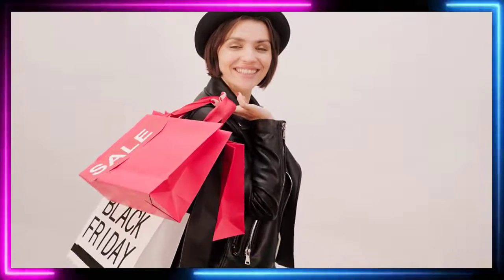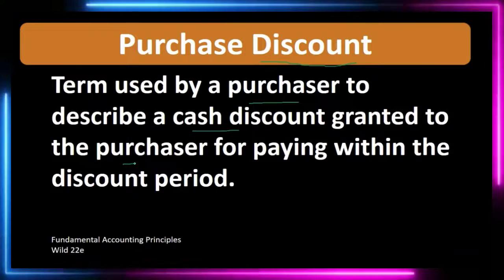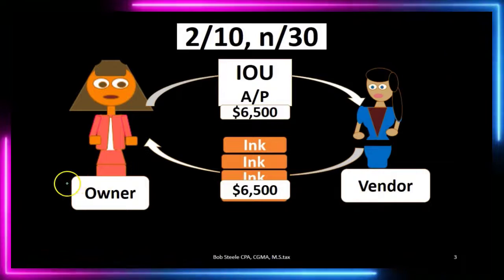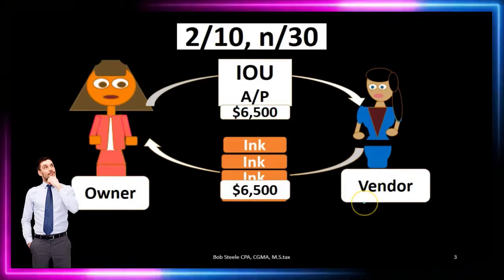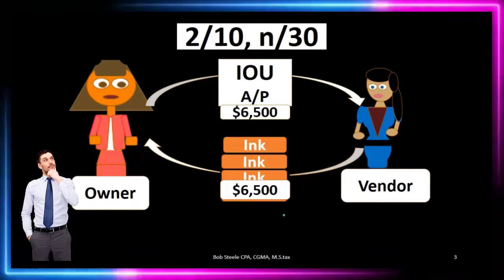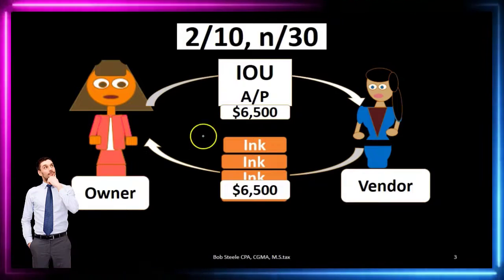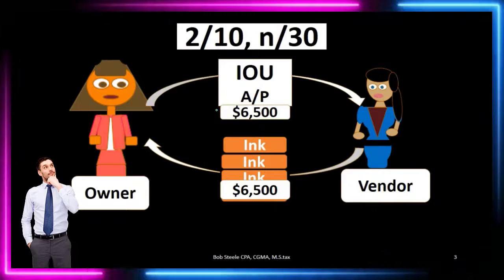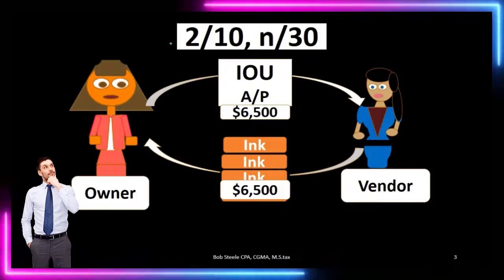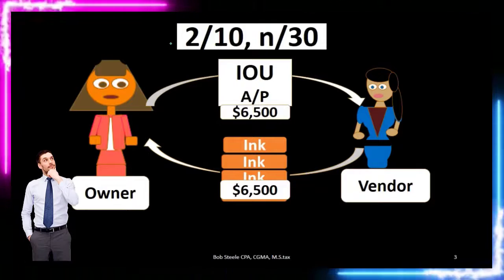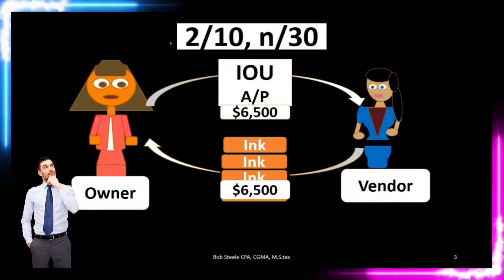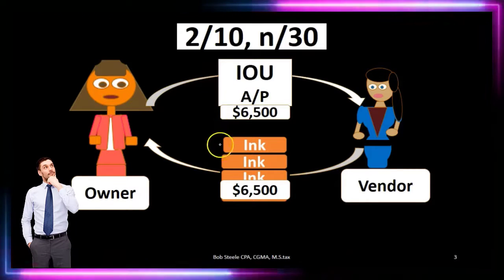We may be receiving a cash discount possibly from buying something like inventory from the seller or vendor. In this transaction, we are the owner on the left side and the vendor is on the right. We are purchasing inventory worth six thousand five hundred on account — meaning we are giving an IOU — and we will pay in the future. Terms may look like two slash ten net slash thirty, meaning we get a two percent discount if we pay within ten days, otherwise we pay within thirty days.